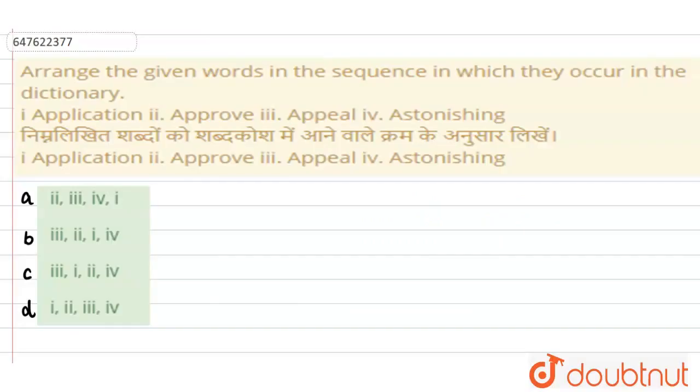Hello everyone, let's start a question. Question says that, arrange the given words in the sequence in which they occur in the dictionary. One, application. Second, approve. Third, appeal. And fourth, astonishing.